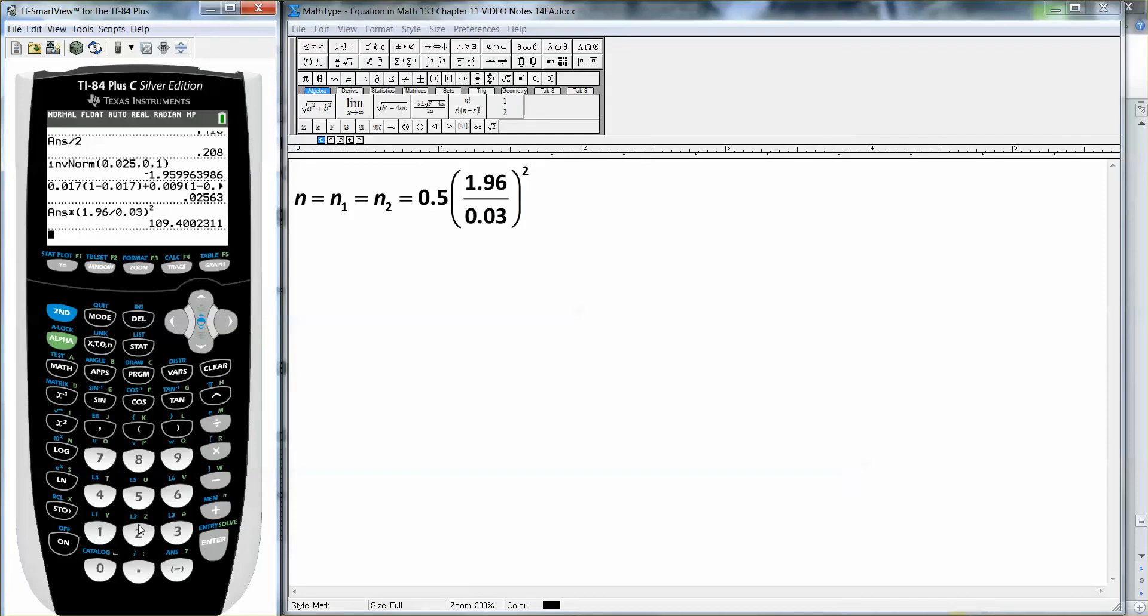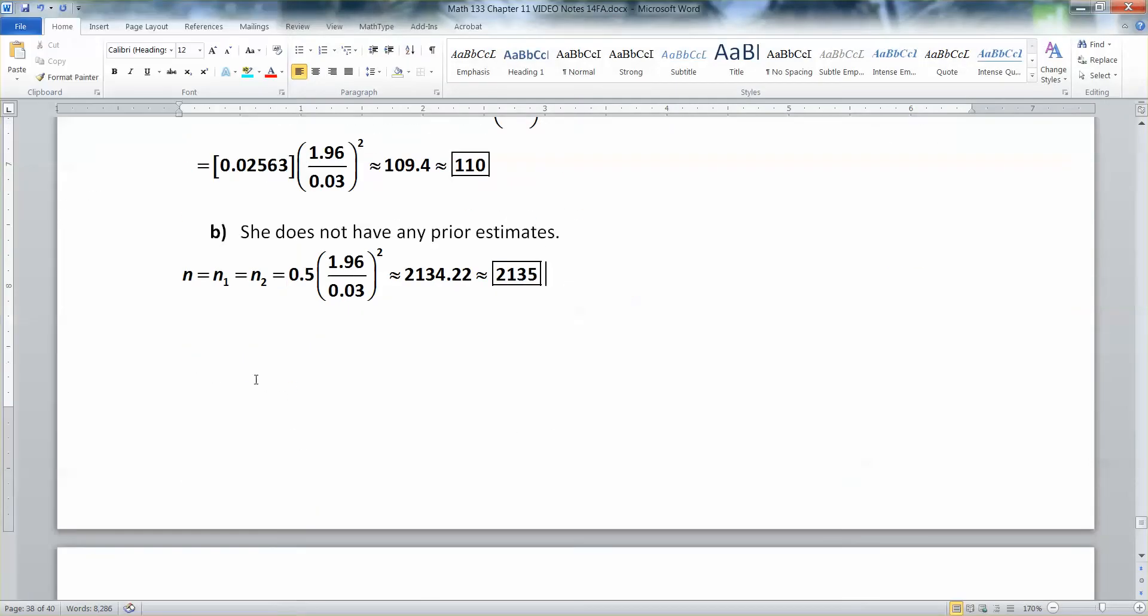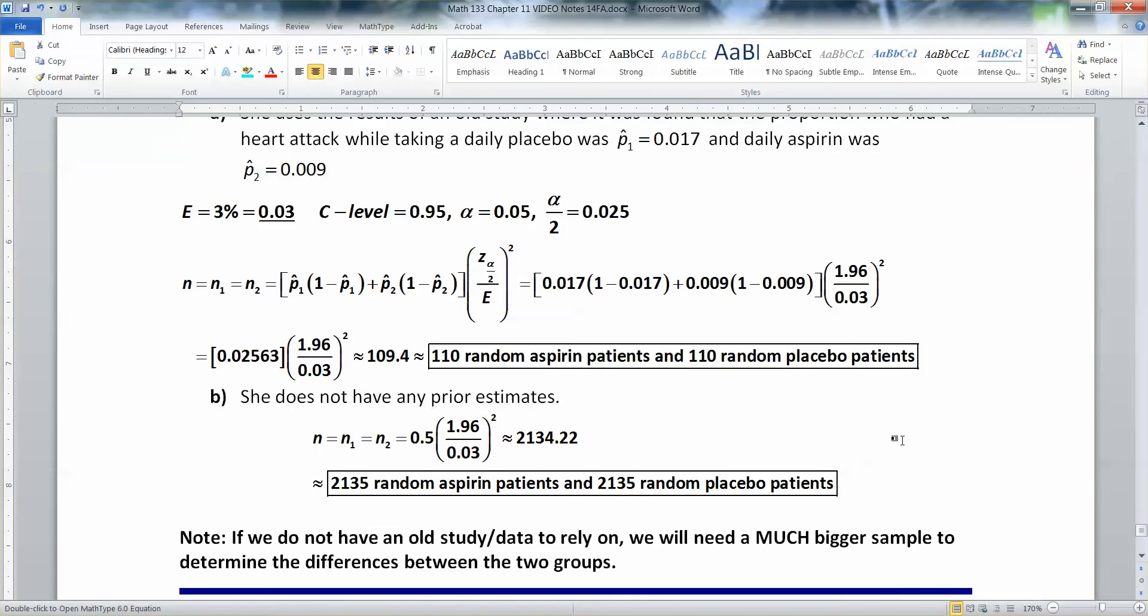So I'm going to take the answer I just had. So I'm going to take 0.5 times 1.96 divided by 0.03, close my parentheses, and square it. Enter. And I hit a huge number because if you don't know anything about your data set, you're going to need a lot more people. Right? And that's what we just learned. If you have an old study, it makes it easier. If you don't have an old study, you're going to have to go get a lot of people. Better make a note of that. There we go.